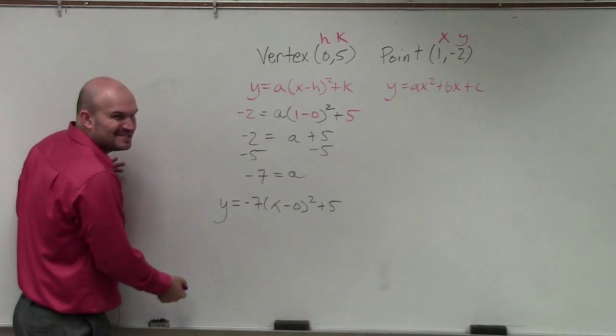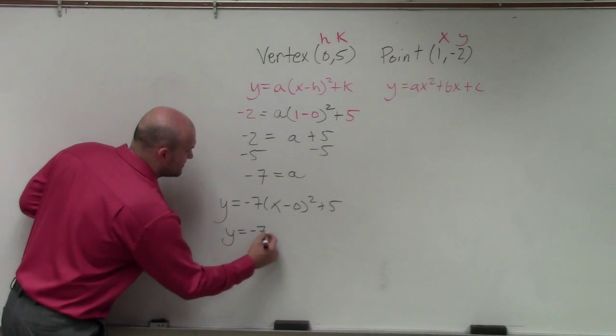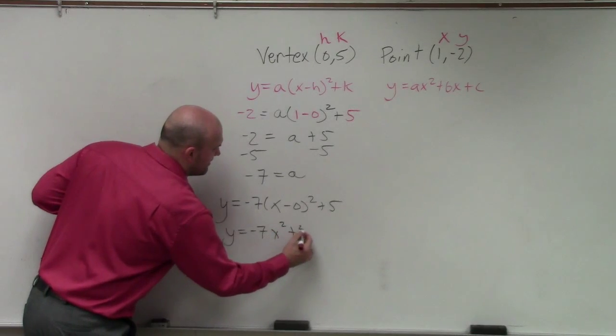We don't really write x minus 0 squared, though. So we can simplify that to y equals negative 7 x squared plus 5.